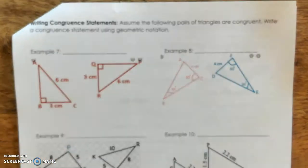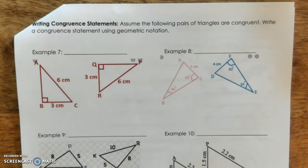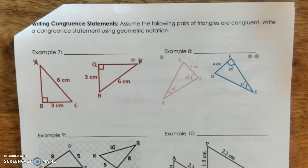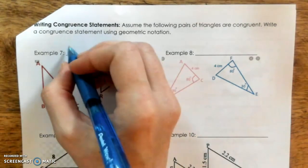Writing congruent statements: assume the following pairs of triangles are congruent. All sides are equal and all angles are equal. We need to identify corresponding angles and sides using geometric notation — they give us enough information to do this. Let's start by labeling the first triangle.